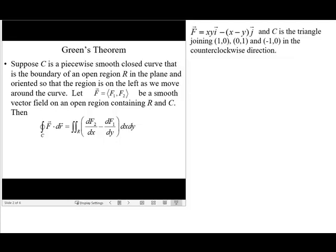In this video, we're going to use Green's Theorem to calculate the line integral for the given vector field xy and -x - y along the path C, which is the triangle joining (1,0), (0,1) and (-1,0) in the counterclockwise direction.